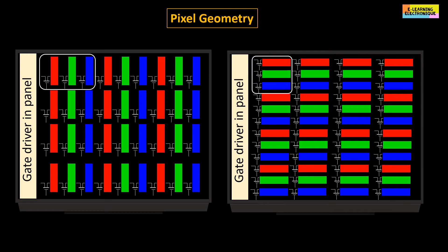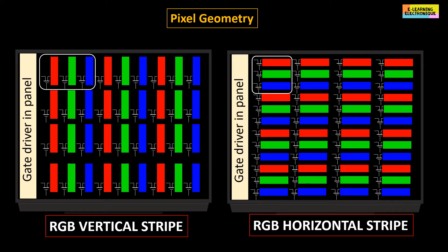In a standard configuration, all pixels are ordered vertically. This structure is called RGB in vertical stripe. In other screens, the pixels can be ordered horizontally, it is called RGB in horizontal stripe.